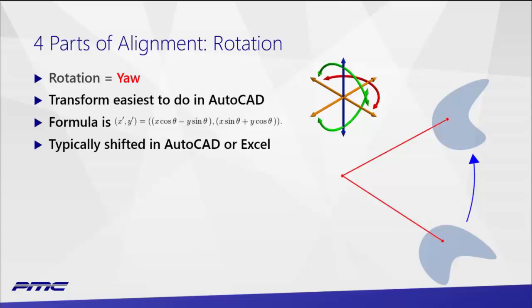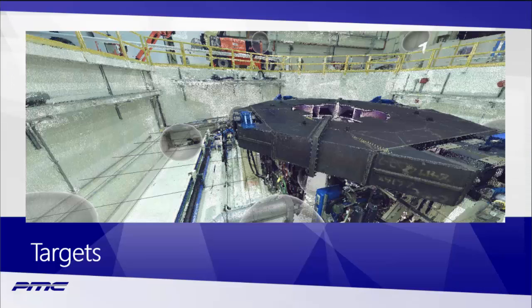Yaw, or rotation, is our Z-axis rotation — or 2D rotation in AutoCAD terms. There is a formula to do this mathematically, but we almost never use it; we tend to do our rotations in AutoCAD because it's much easier than building an Excel sheet with the math. Those are the four key elements we need to control to establish alignment. Now, what are we going to align to? We need some known point — we talked about datums, but we don't always have a nice brass tag in the floor to go off of.